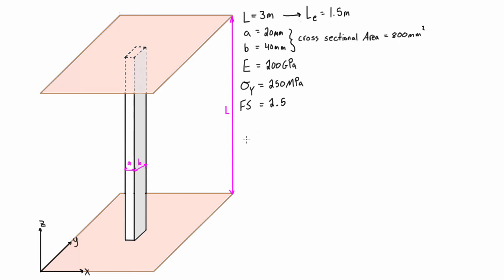So the formula that we need to use, just like the last couple videos, is p crit is equal to pi squared EI over LE squared. The effective length squared.